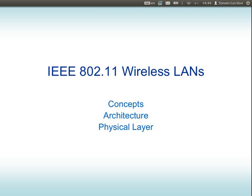We're going to look at what a wireless LAN is — a wireless local area network — specifically focusing on IEEE 802.11 wireless LANs, which is a standard for wireless LANs. We'll explain the difference between the standard, the name, and the terminology, and then look at the different protocols used in wireless LANs and some details about the physical layer transmission.